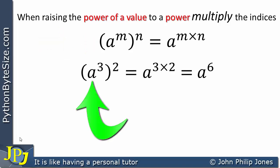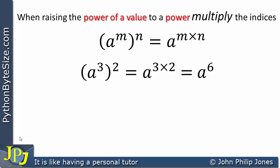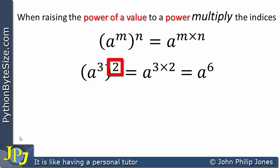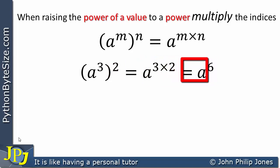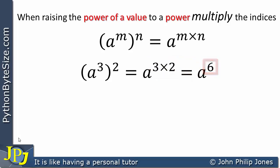Here we can see the base has been raised to the index of 3, and this is then raised to the power of 2 — or the index of 2, or the exponent is 2. What we can see here is we multiply together the indices, and that gives us a to the 6, because 3 times 2 is clearly 6.